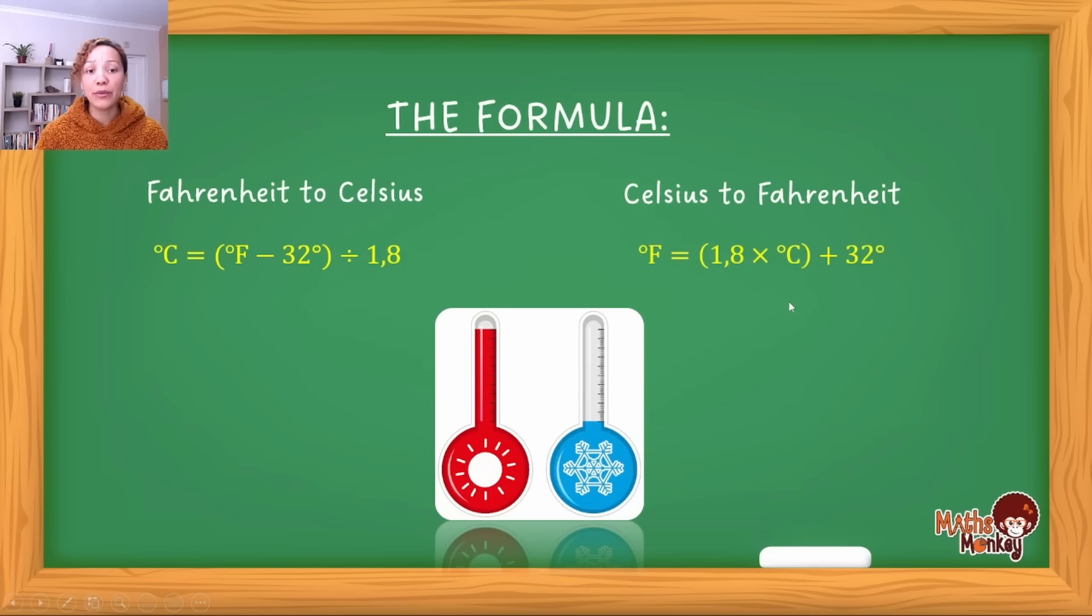When we convert from Celsius to Fahrenheit, we use this formula: °F = (1.8 × °C) + 32. Fahrenheit is alone on the left-hand side. These formulas are simple and easy to use. These are formulas you do not have to study for exams—they will give them to you—but knowing how to apply them is what's important.